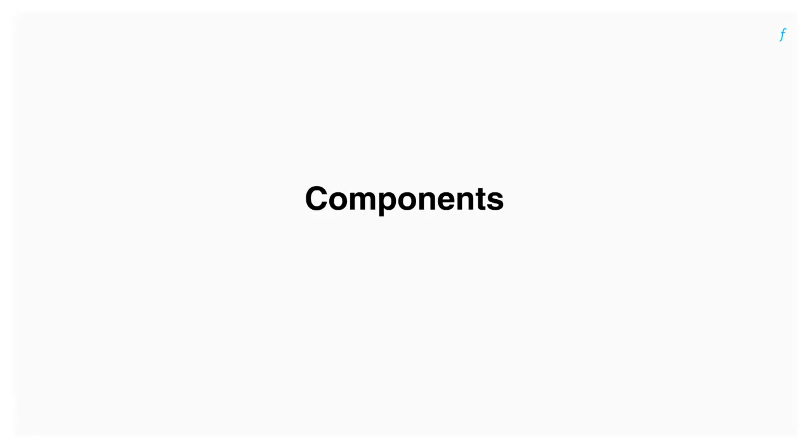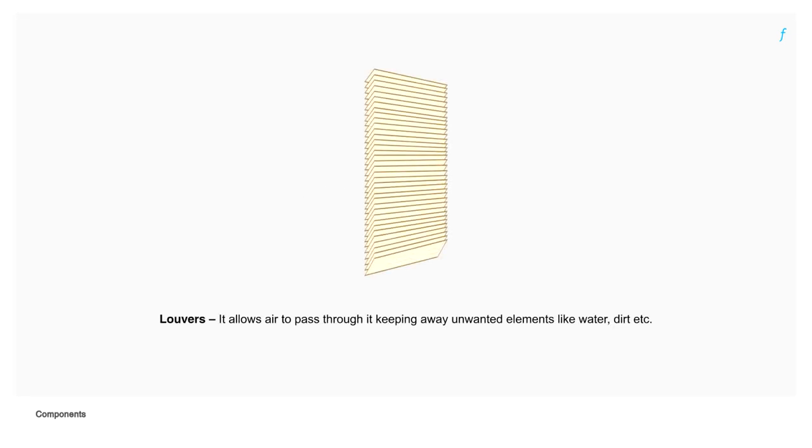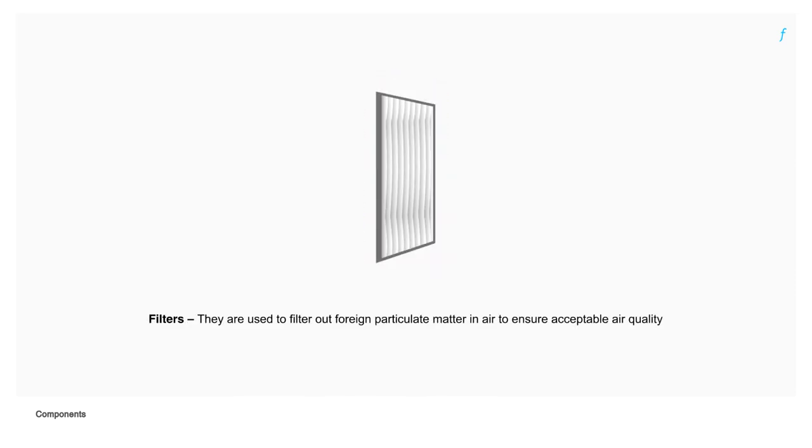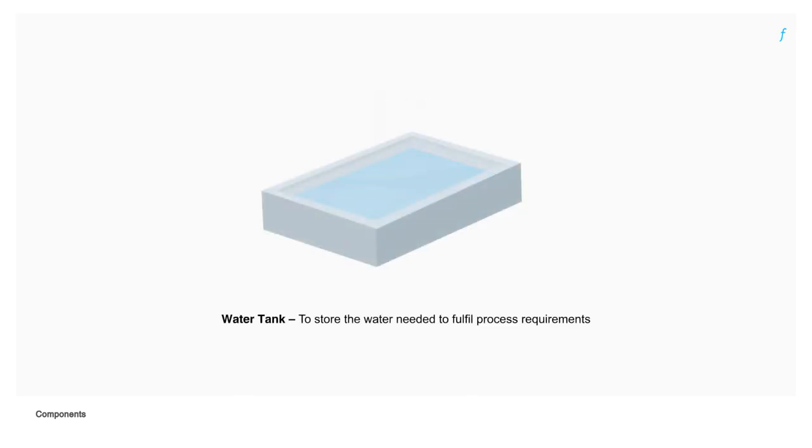Let's now have a look at the components involved. Lures allow air to pass through at keeping away unwanted elements like water, dirt etc. Filters are used to filter out foreign particulate matter in air to ensure acceptable air quality. Water tank is used to store the water needed to fulfill process requirements.